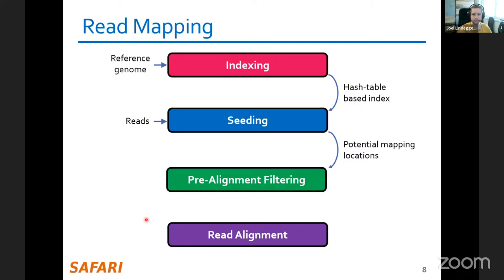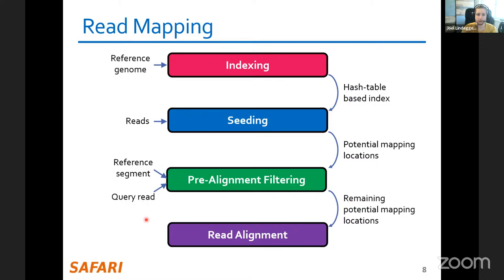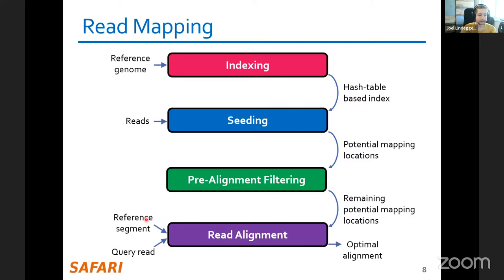In the seeding step, we obtain a read from the sequencing machine and check in the hash table where it might fit well. This results in a large number of candidate mapping locations. Pre-alignment filtering quickly rejects most of them. The ones that pass the filter go into pairwise sequence alignment — read alignment — and that optimal alignment is the final output of read mapping.